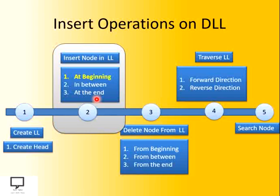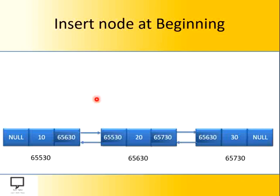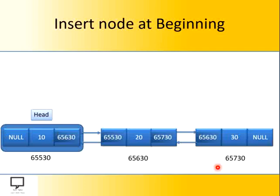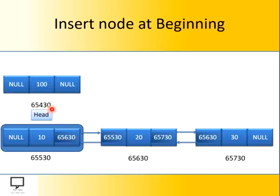First of all, let's start with insertion at the beginning. If I want to insert a node at the beginning, what steps are supposed to be followed? Let's consider this is a doubly linked list with three nodes. If I want to insert a node at the beginning, we have to start with the head node. Whenever we create a new node, we initialize both the next field and the previous field to null. I have accepted its information part as 100. Now, as I want to insert this node at the beginning, I have to update this next field to the head node — that is the address which is present in the head node — and it will form a logical link between these two nodes.